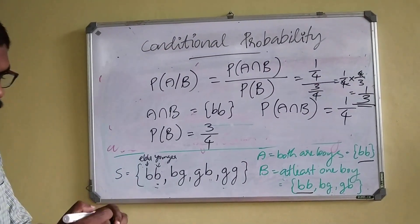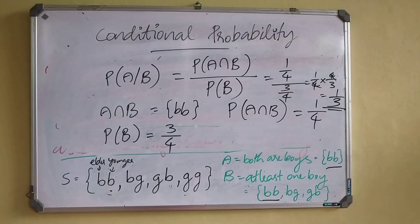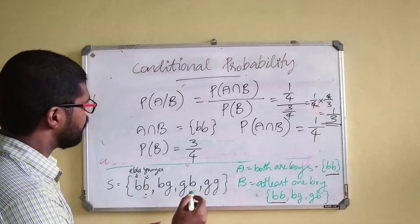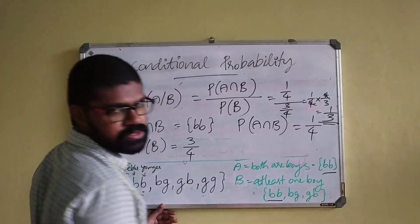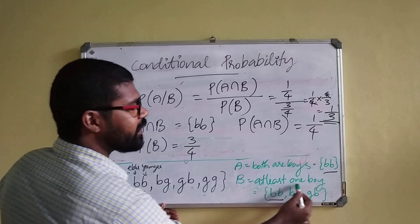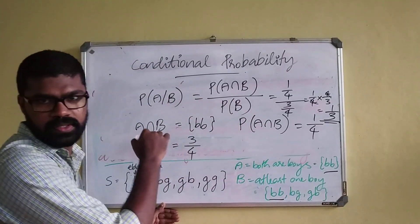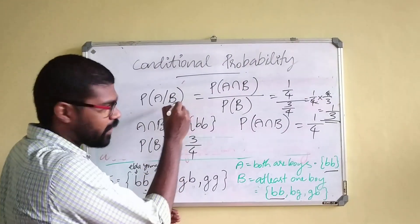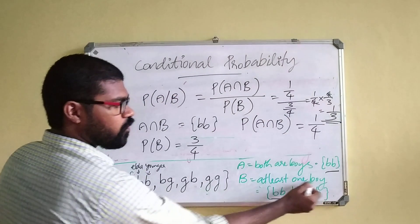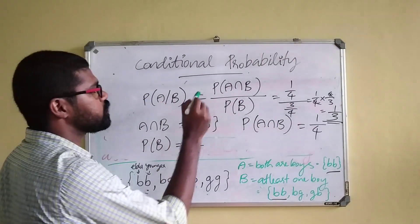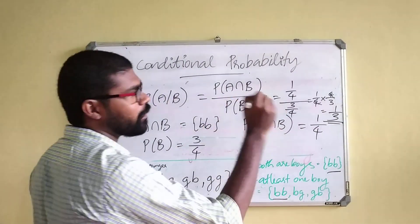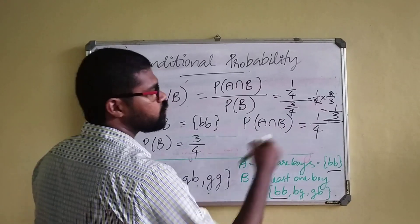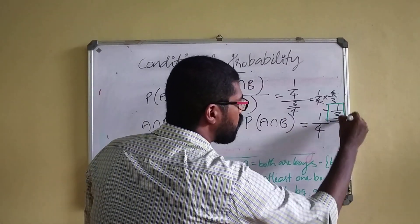So event A is both are boys, given that at least one boy is there. We used P(A|B) where probability of A∩B equals 1/4 and probability of B equals 3/4. The final answer is 1/3.